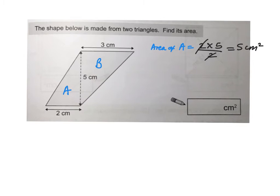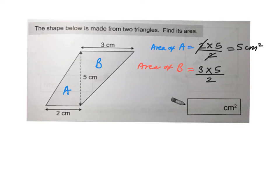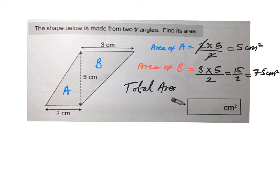Now let's work out the area of B. The area of B: the base here is 3 centimetres, the height is 5 centimetres, so base times height divided by 2. 3 times 5 is 15. 15 divided by 2 is 7.5 centimetres squared. So the total area of this shape is 5 plus 7.5, that is 12.5 centimetres squared.